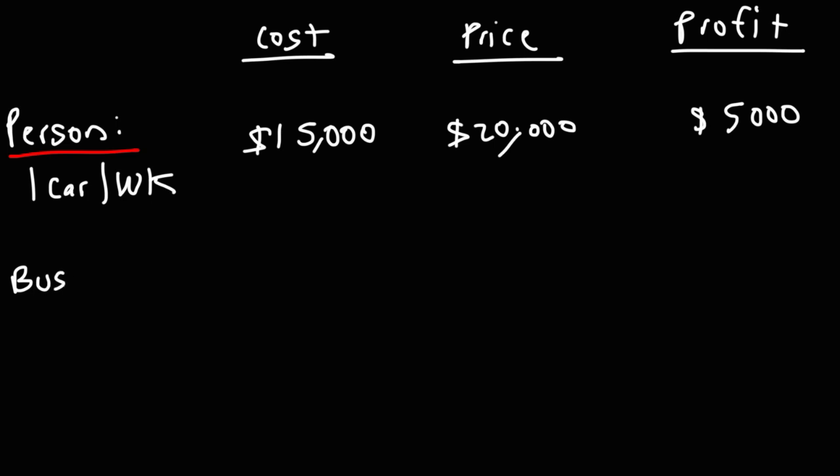Now let's compare that with a business that has a team of 50 people building cars. Because the business has so many people building cars, the average cost will be much less — maybe $5,000 as opposed to $15,000 to build a car. As a business, they can have an assembly line for efficiency, and they can buy items needed to build a car in bulk. Instead of buying one engine, which may cost $1,000–$2,000, they can buy 1,000 engines per week and the average cost per engine might drop to $500 or $300. Buying in bulk typically gets you a discount, which reduces the average cost of making the car.